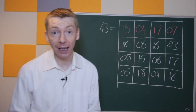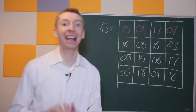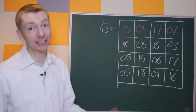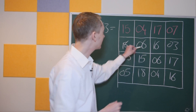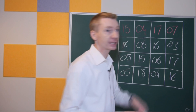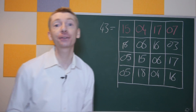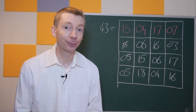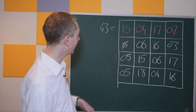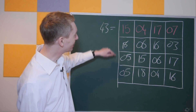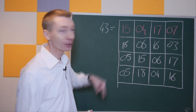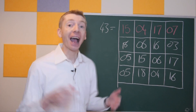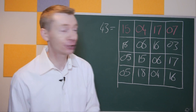It is a magic square. Every row should now add up to that special magic birthday number. Let's have a look at the second row: 18 plus 6 is 24, plus 16 is 40, plus 3 — it's 43. And the other rows should work as well. The columns should add up to that magic number too. Let's do the first column: 15 plus 18 is 33, plus 5 is 38, plus 5 again is 43. So it does work.